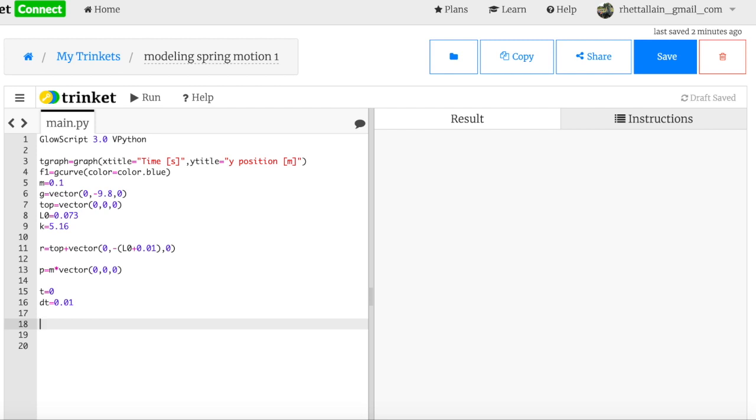Now, I think I'm ready to do the loop. So I'm going to say while t less than 4. I don't know why I picked 4. If it's not long enough, that's fine. Now, the first thing I need to do is to calculate L. So what is the vector L? It's the vector from the top point to the position that I'm at right now. So I'm going to say L equals R minus top. Does that make sense?